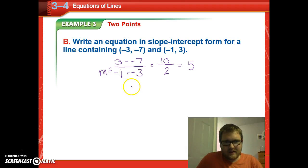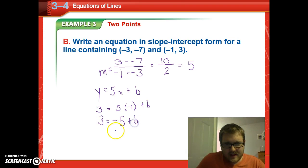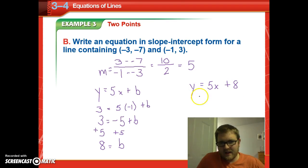So then my y-intercept, again, we have to solve for b. So we're going to put in y equals 5x plus b. Use either point. I'm just going to use the second one this time. So 3 equals 5 times negative 1 plus b. Or in other words, 3 equals negative 5 plus b. Add 5 to both sides, and we get 8 equals b. So we can plug that in, and we get y equals 5x plus 8. Remember, you're always trying to find an m and a b. The y and x remain variables of the function.